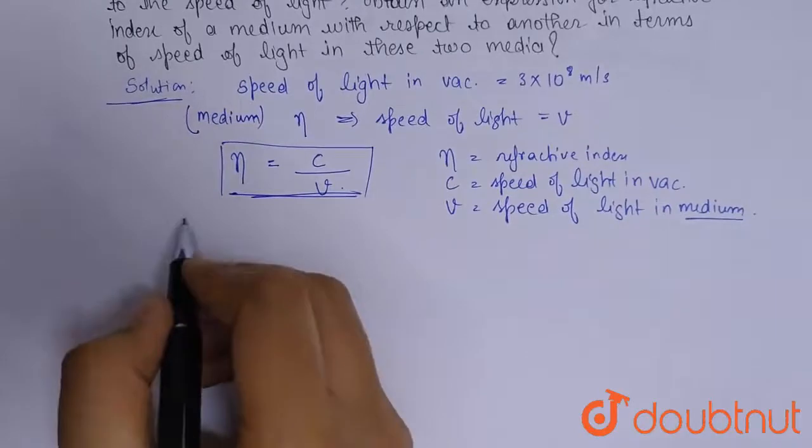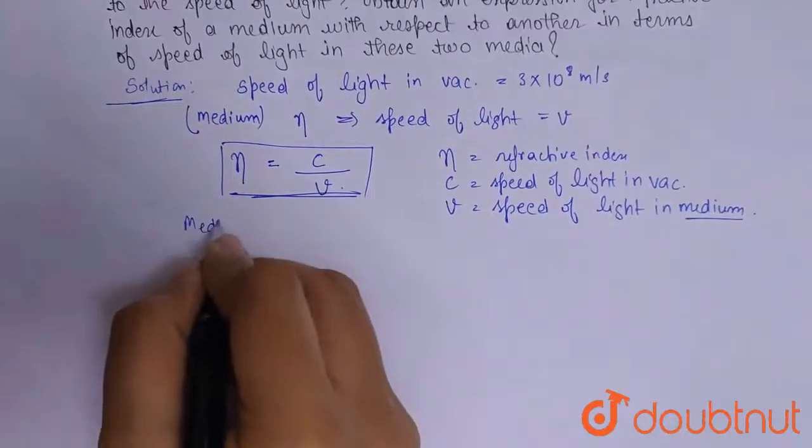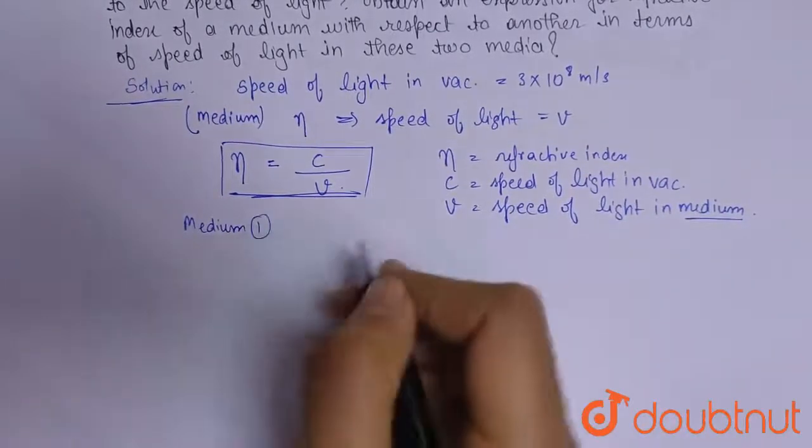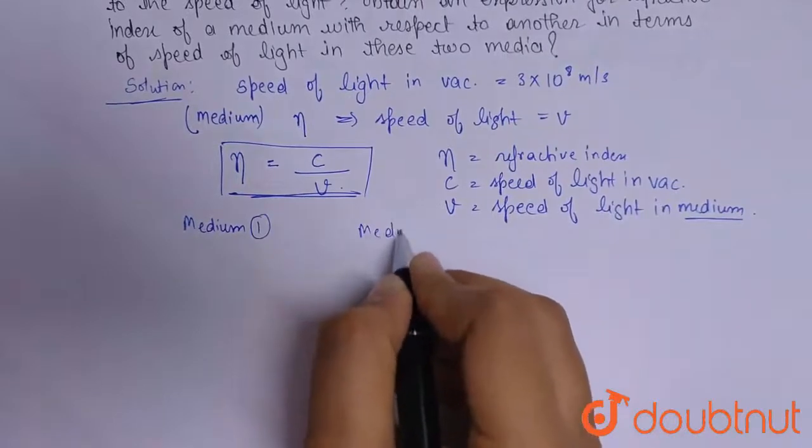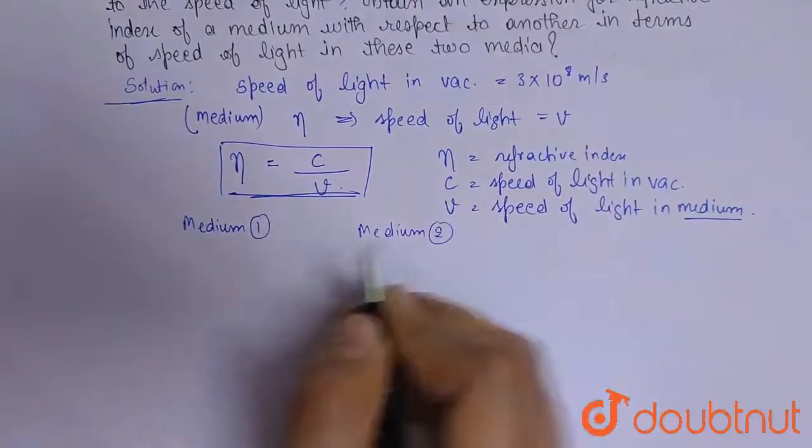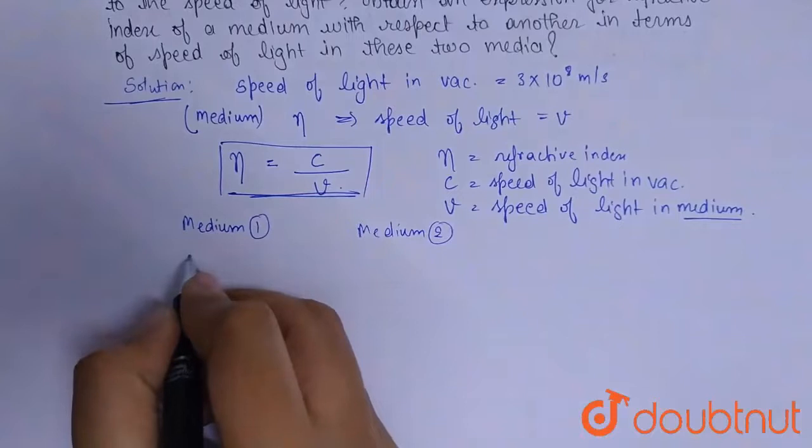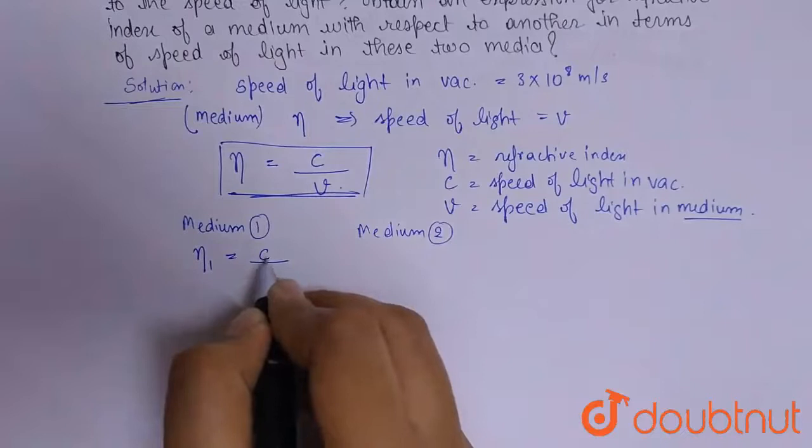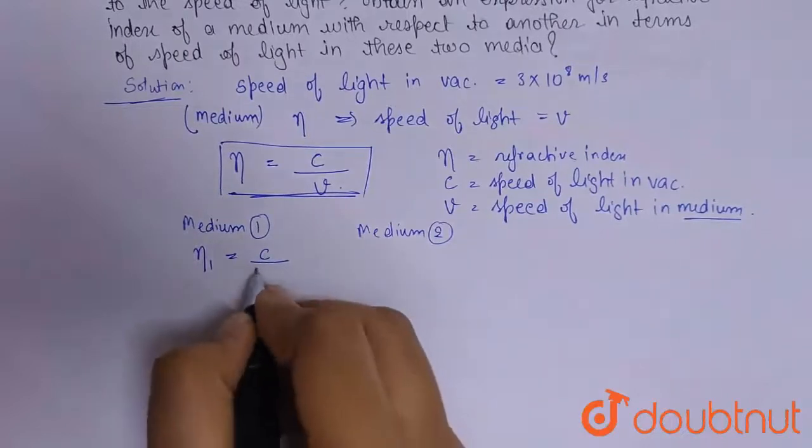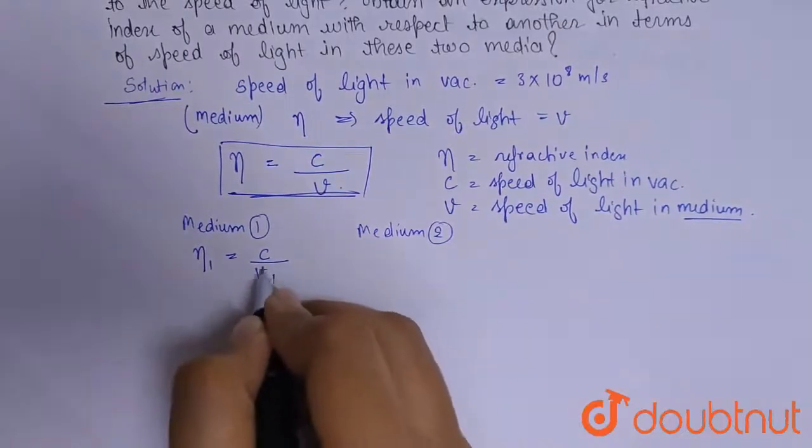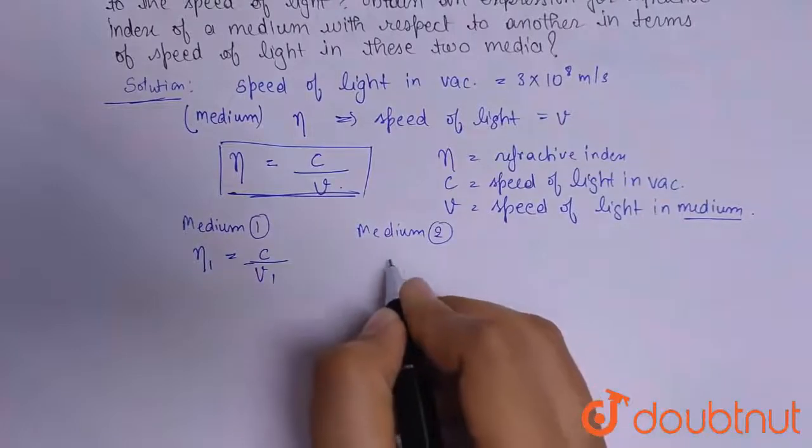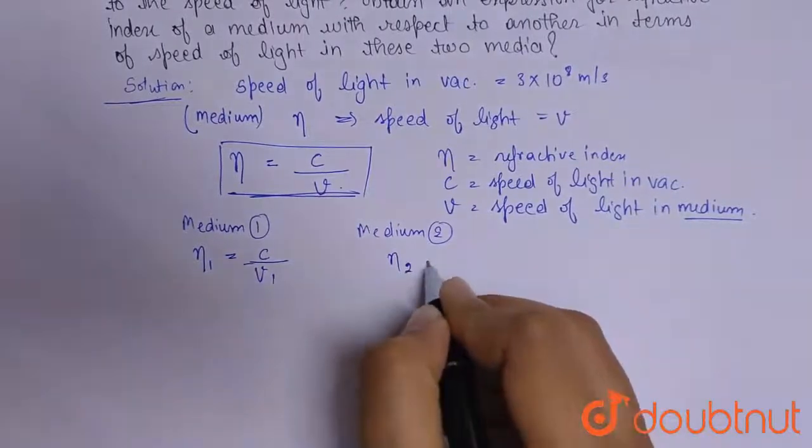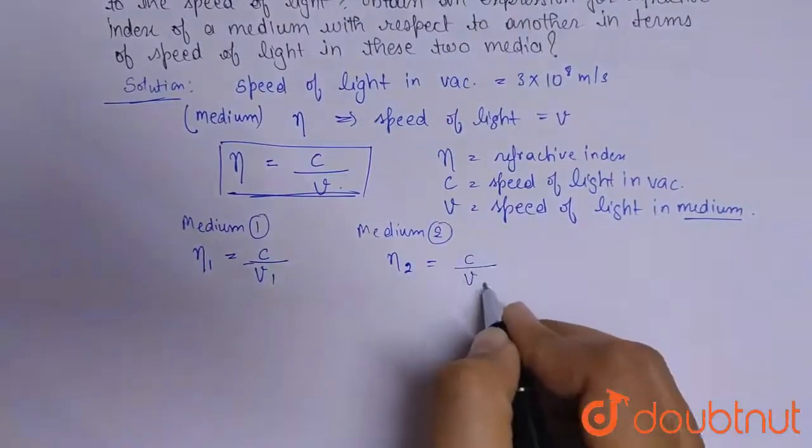and this is medium two. So we can say that n1 for medium one will be c, because this is a constant, so n1 = c/v1, and for medium two we can write n2 = c/v2.